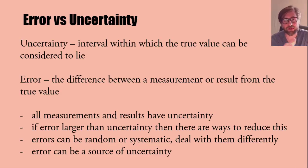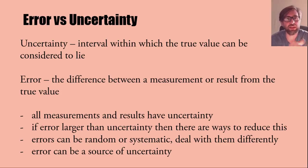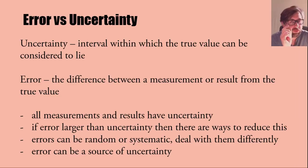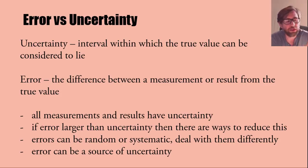The uncertainty is an interval whereas the error is the actual difference, and errors cause uncertainties. When we measure something we get an error — we're never going to be exactly right — and if we repeat it won't be exactly the same, so that causes uncertainty. If your error is larger than your uncertainty there are ways to minimize that error. Your experiment is a success if your result falls within your uncertainty.